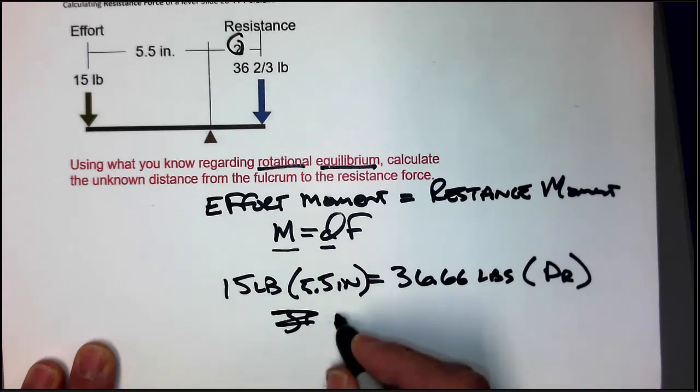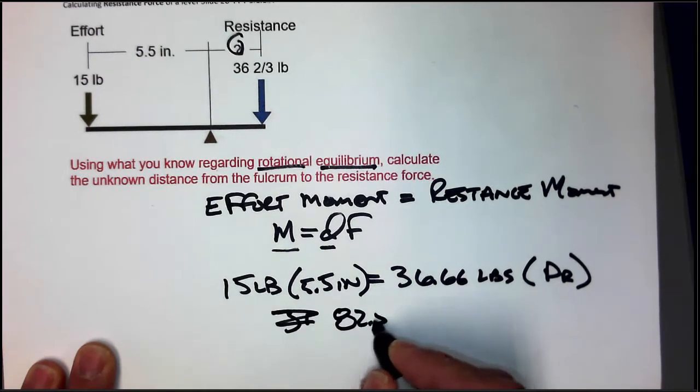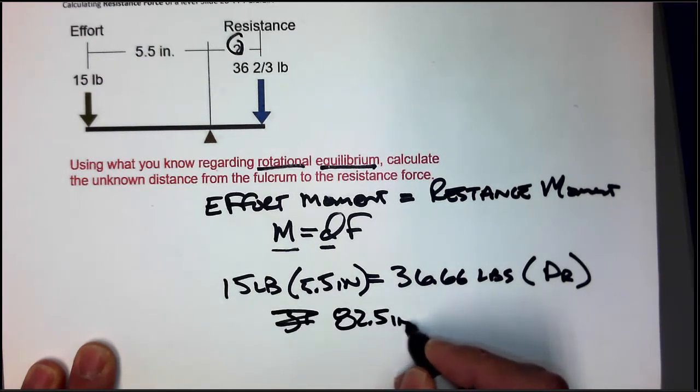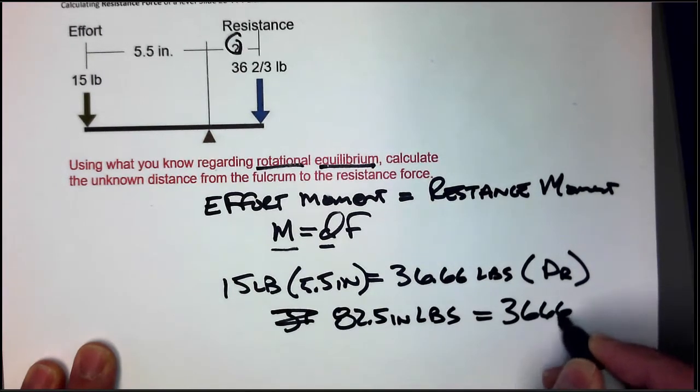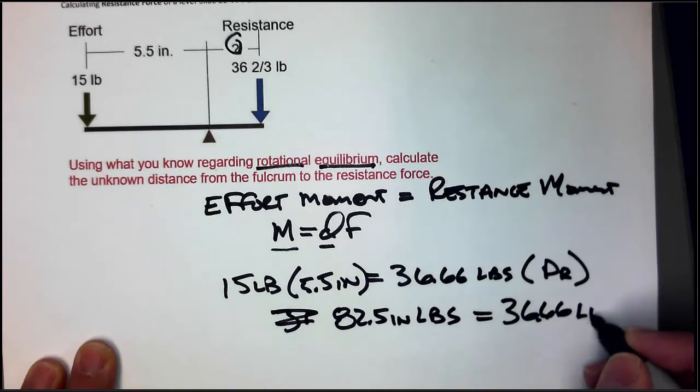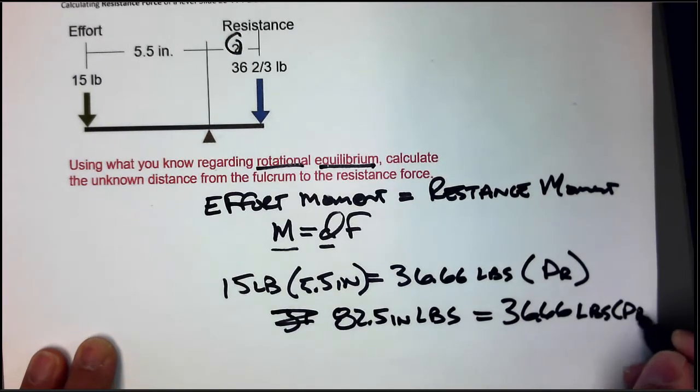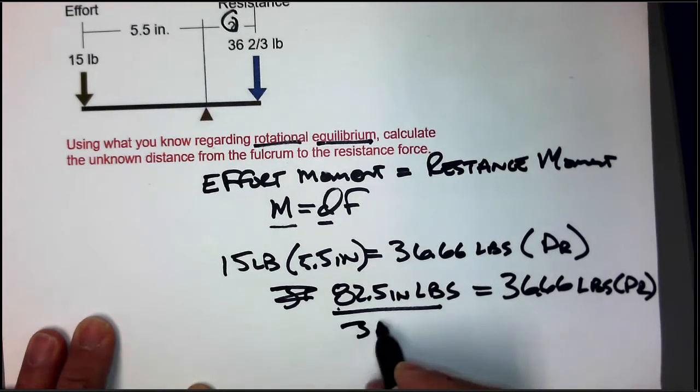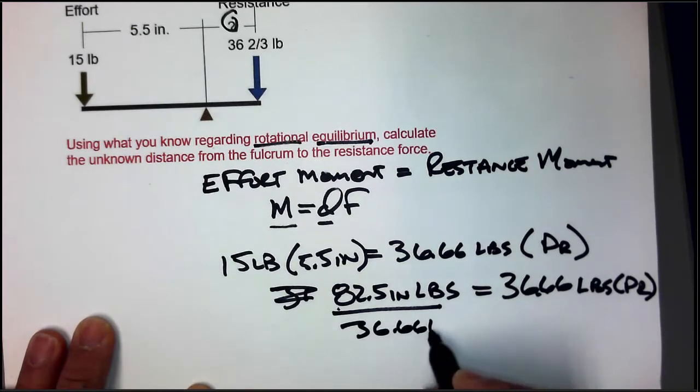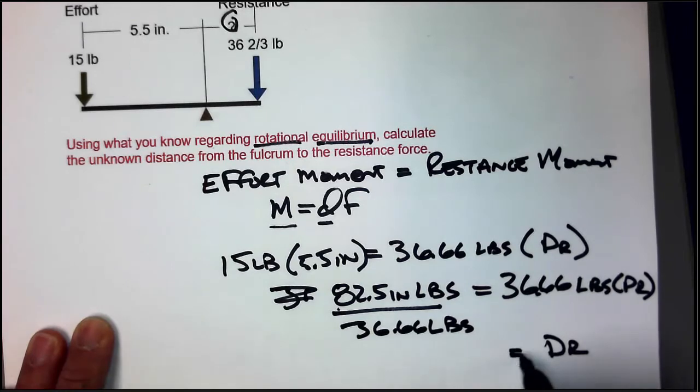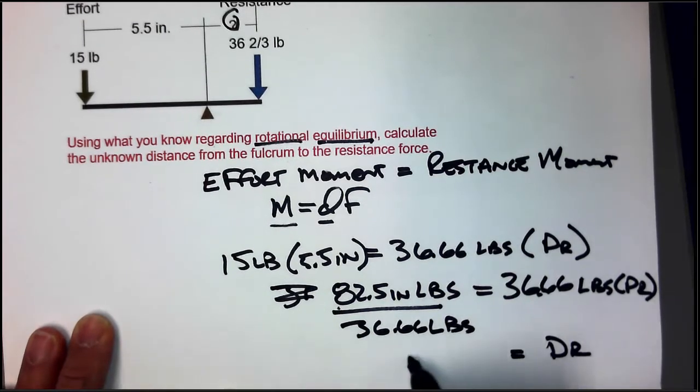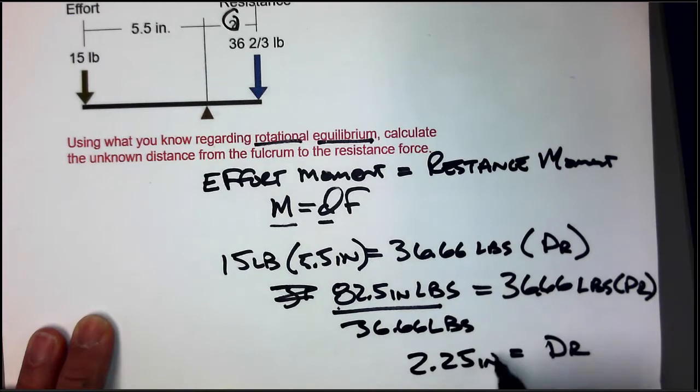Multiply this out and we get 82.5 inch pounds equal to 36.66 pounds times DR. Divide by 36.66 pounds. It leaves DR all by itself. And we end up with an answer of 2.25 inches.